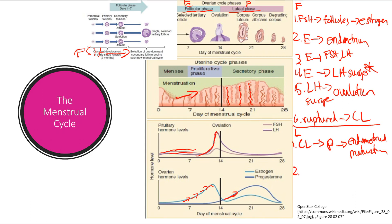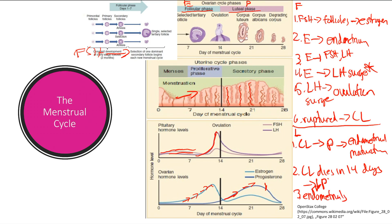But if no blastocyst implants or grows, your corpus luteum dies in 14 days. So what happens to progesterone? The corpus luteum dies, and then progesterone goes down. It was previously nourishing a nice endometrium, but once it goes down, your endometrium dies and it sloughs off — endometrial sloughing. That's basically menses. You're going to get some hormones that cause your uterus to contract, which is why you get cramps, and it's also going to push out that endometrial lining, which is why you get the blood coming out. And so that's it for the menstrual cycle.